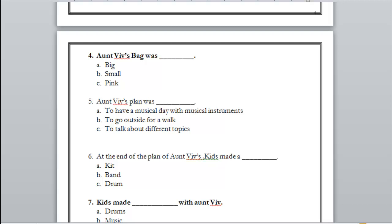It was big — yes, you remember it could hold so much inside. Now let's get to number five: Aunt Vive's plan was to have a musical day with musical instruments, to go outside for a walk, or to talk about different topics? Exactly — to have a musical day with musical instruments. Number six: at the end of the plan, Aunt Vive's kids made a cat, a band, or a drum? Exactly — kids made a band.